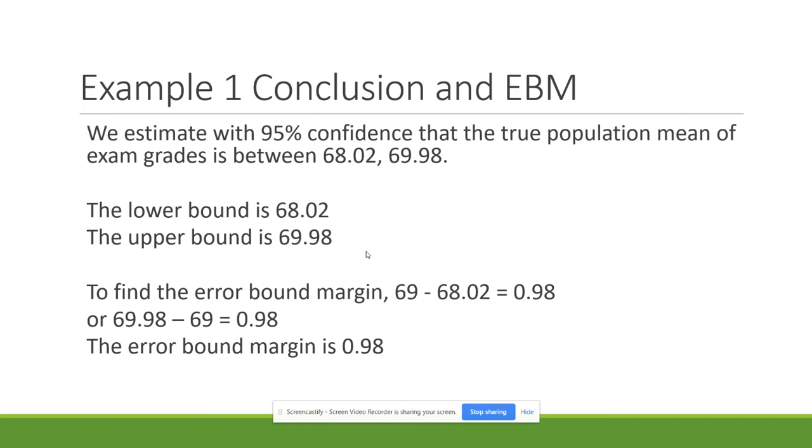My final step – I'm given those two things from Minitab, lower bound and upper bound – and then I can find the error bound margin. I take the sample mean, which was 69, and I subtract the lower bound from it to get 0.98. Or I take the upper bound and subtract the sample mean to get 0.98. You can do it either way.